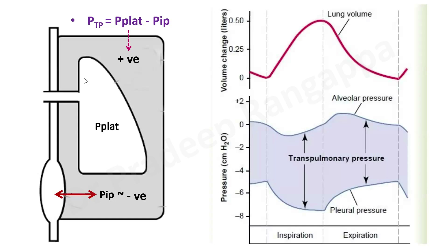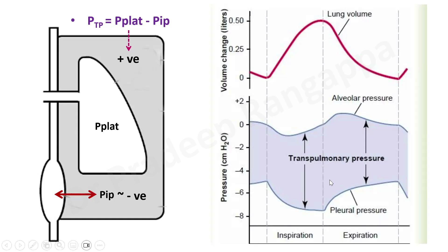When we talk about transpulmonary pressure, we discuss it in the context of inspiration and expiration. In a previous video on COPD the problem lay with expiration, but with transpulmonary pressure the whole problem rests with inspiration — because inspiration is an active process and expiration is passive. The whole pressure effect and the settings we apply in pneumonia and ARDS mainly relate to inspiration, where inspiratory efforts cause all the changes.